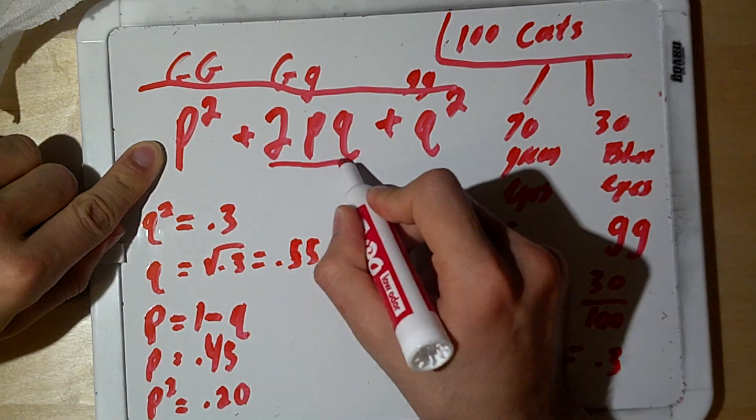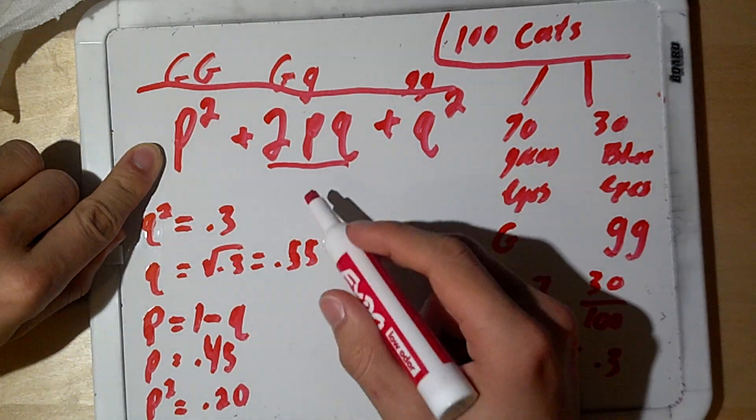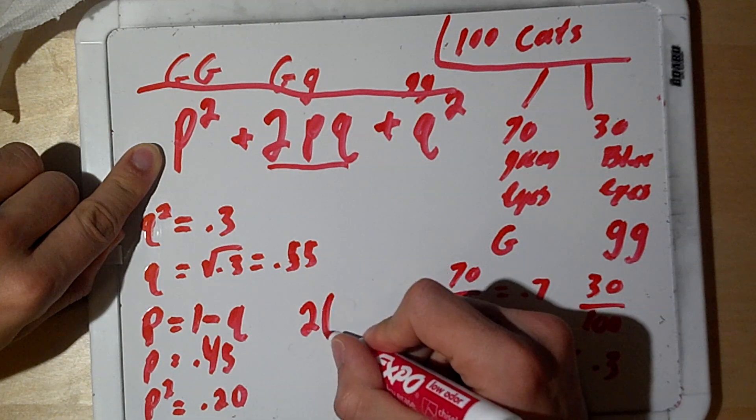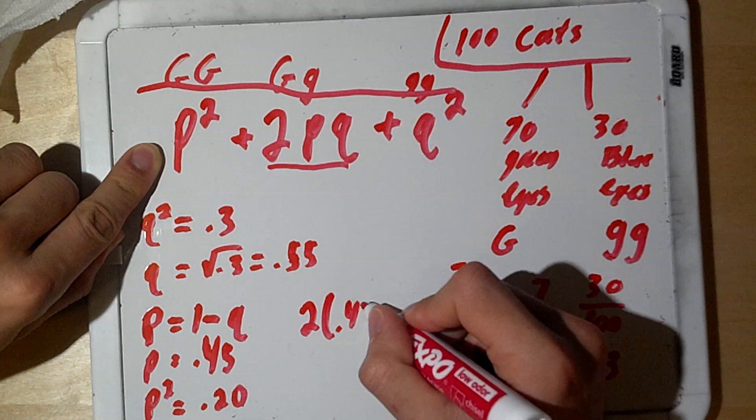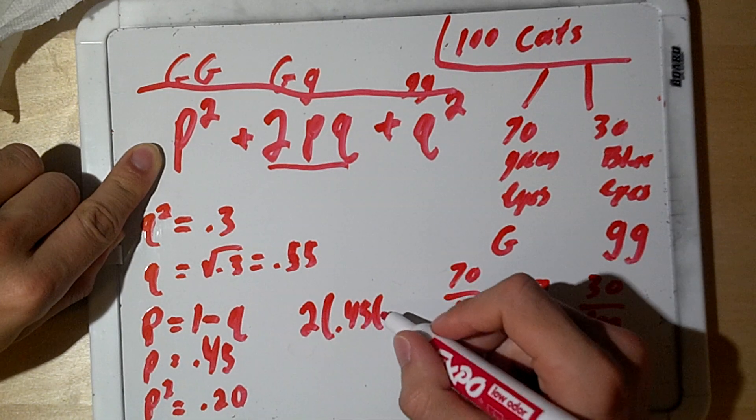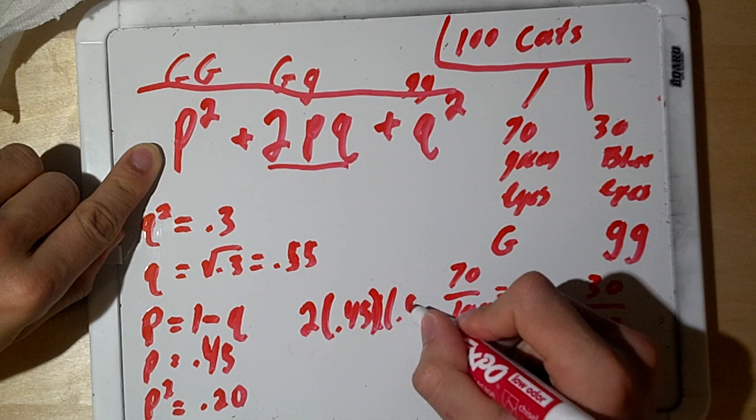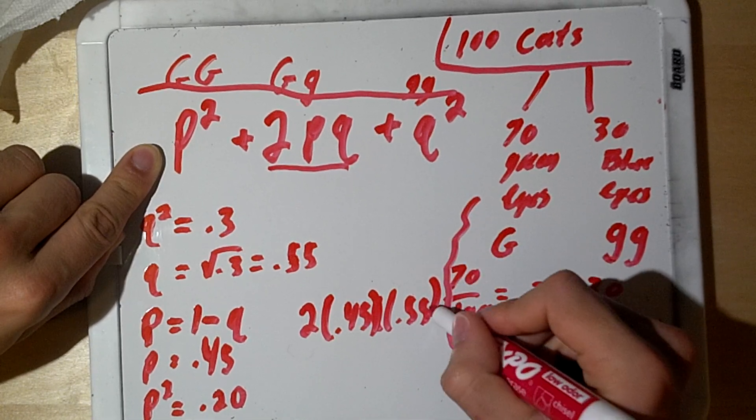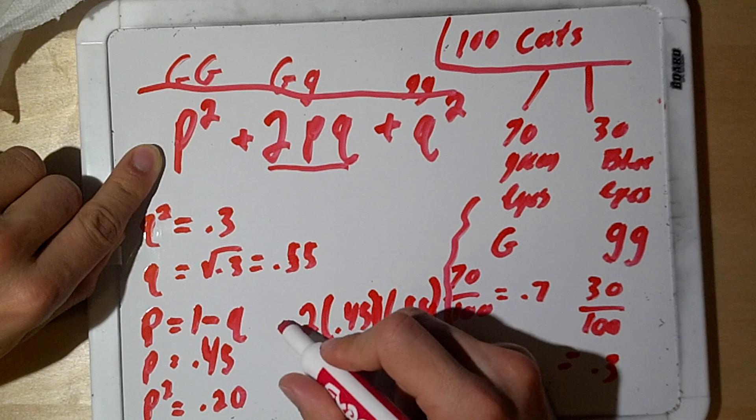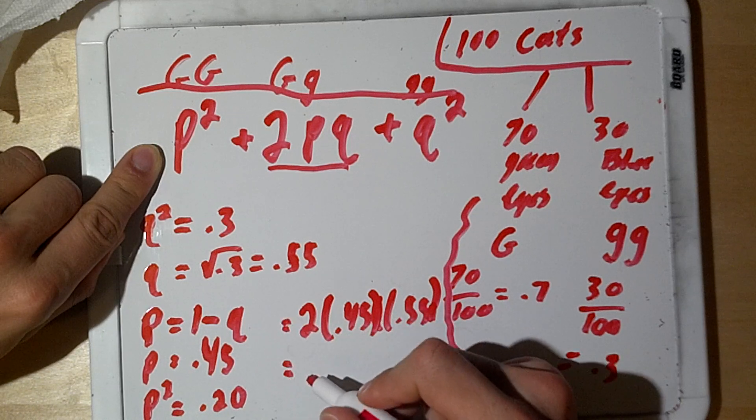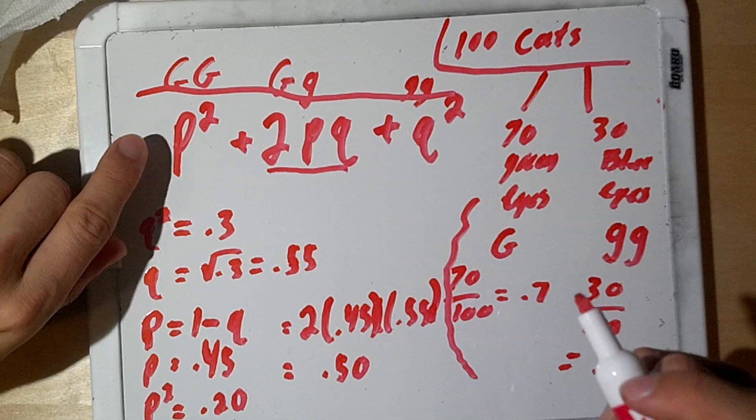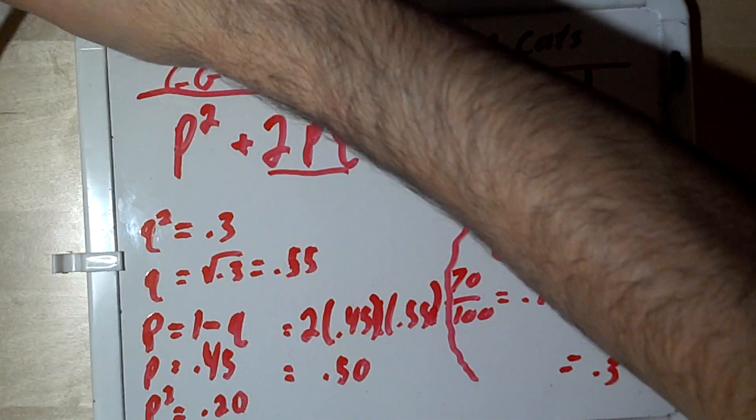Now, what we're missing is our 2pq. Now, to find where the heterozygous allele frequency is, we just do 2 times p, which is going to be 0.45, and then multiply that by 0.55. Let me just move this to the side here. And this is defined as 2pq. And 2pq is going to give us roughly 0.50. Now, let me clean this up a little bit.